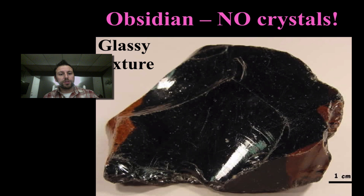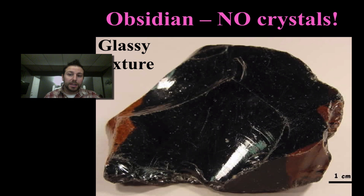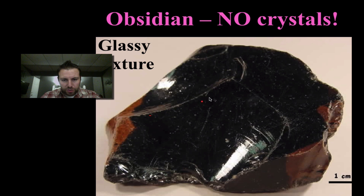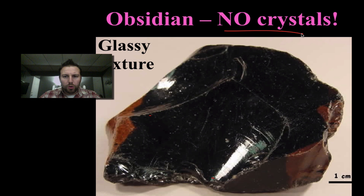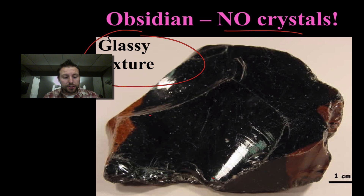What if there are no crystals? Some igneous rocks, like obsidian, have no crystals but have a glassy texture. You can see it is very smooth with a nice sheen and reflection. Obsidian, with no crystals, is considered to have a glassy texture.